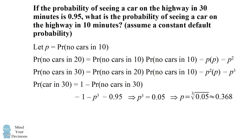We now need to calculate the probability of seeing at least one car in 10 minutes. This is equal to 1 minus the probability of seeing no cars in 10 minutes which is equal to 1 minus p which is equal to approximately 0.632. So it's an approximately 63 percent chance that you'll see at least one car in 10 minutes.